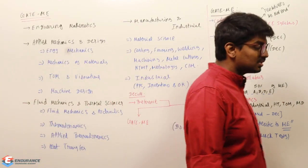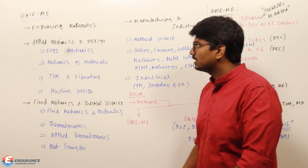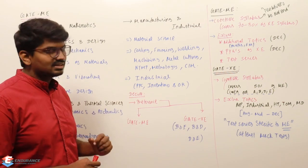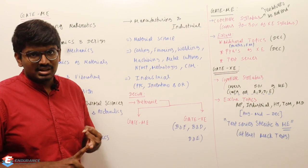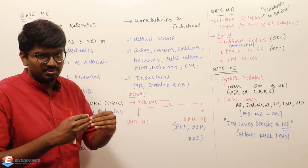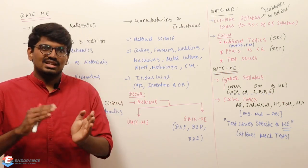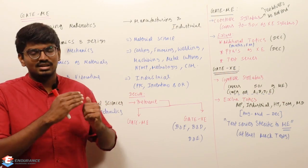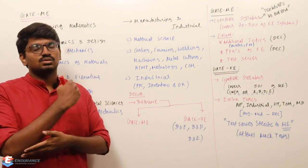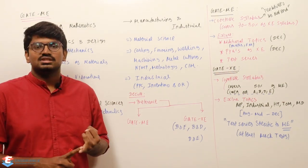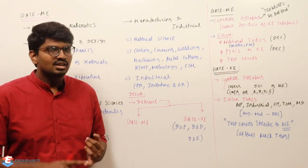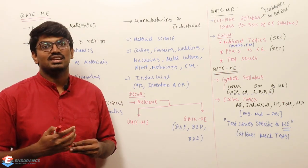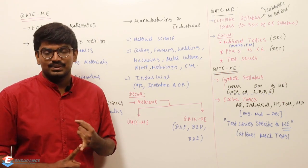Now talking about GATE XC — most of the syllabus is going to be common. General Aptitude is common, as I said. Mathematics will be there, but in GATE XC there are some extra topics. For example, partial differential equations need to be discussed in detail — in GATE ME we discuss PDEs only a little, but in XC there are detailed methods to solve PDEs. Also sequences and series, limits of two-variable functions, and some other small topics are included. The major difference between GATE XC and ME is partial differential equations and sequences and series.